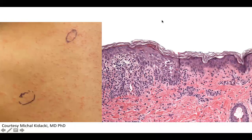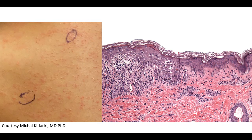Welcome back to DP60. Today we have a CPC of a new onset rash on the back of a patient with a history of a stem cell transplant. He also had diarrhea. There are pink papules on the back with a corresponding lymphocytic infiltrate, vacuolar change, and necrotic keratinocytes. Can you guess the diagnosis?